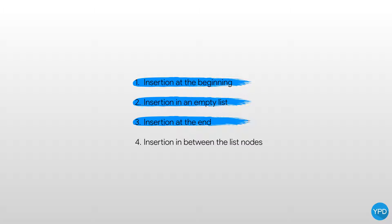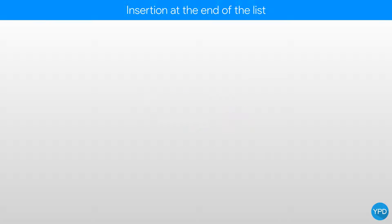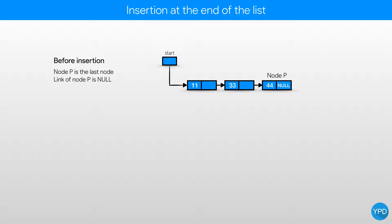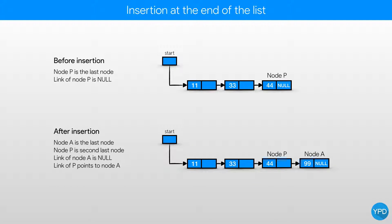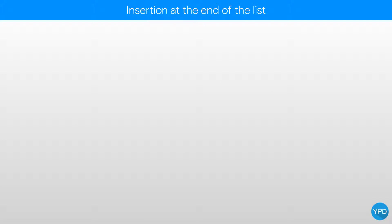Let's see the third point: inserting at the end. Before insertion, node P is the last node and the link of node P is null. After insertion, node A is the last node, link of node A is null, and link of node P is pointing to node A. By just looking at the diagram, I can understand that I have to reach node P first and then insert node A.